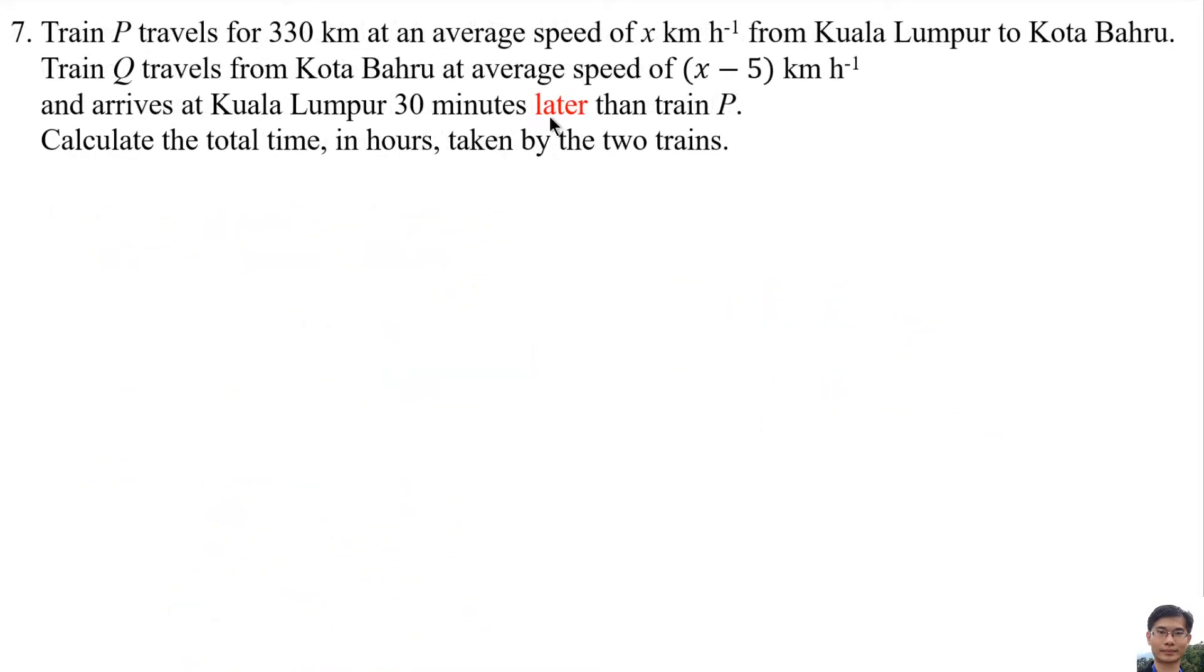Before doing this question, please correct the question later. Train P travels for 330 km at an average speed of x km per hour from Kuala Lumpur to Kota Bahru. The formula of speed is distance over time. The speed is x km per hour. The distance is 330 km, and the time is 30 minutes later than train P.